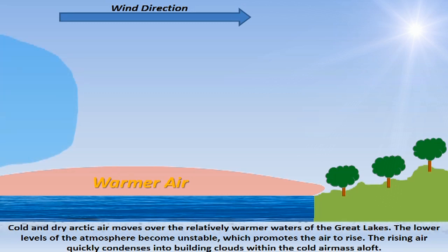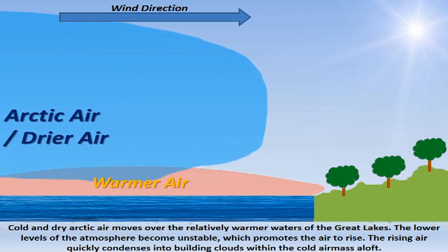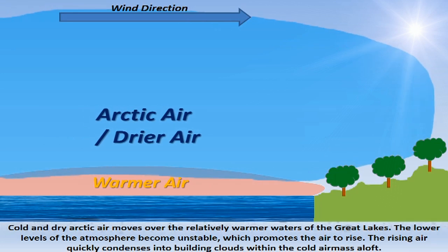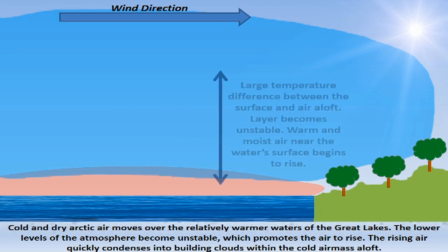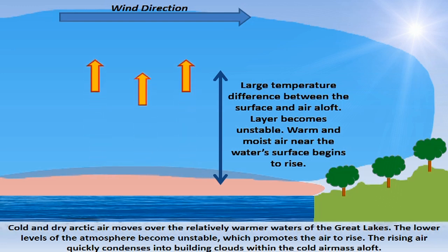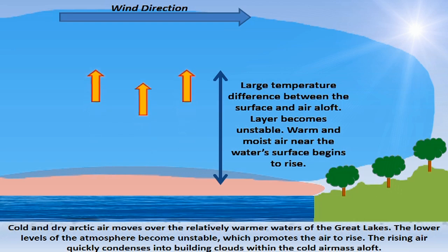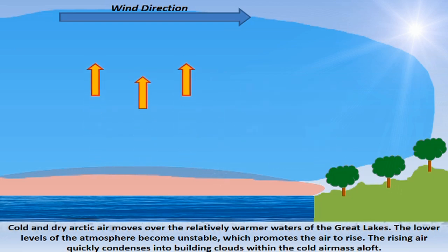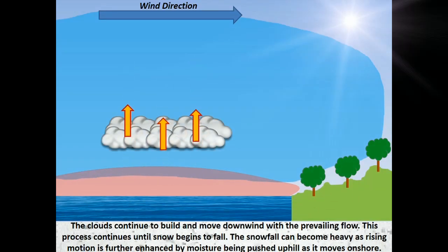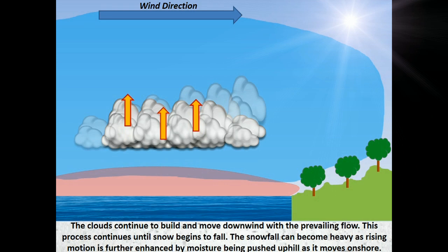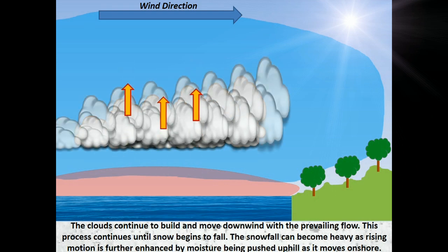Cold and dry arctic air moves over the relatively warmer waters of the Great Lakes. The lower levels of the atmosphere become unstable. This promotes the air to rise. The rising air quickly condenses into building clouds within this cold air mass aloft. The clouds continue to build and move downwind with the prevailing flow. This process continues until snow begins to fall.